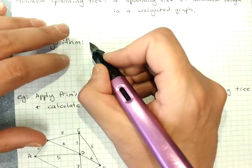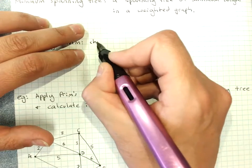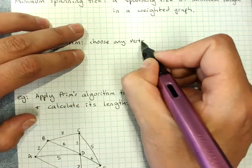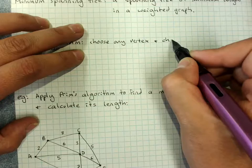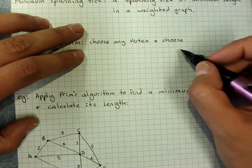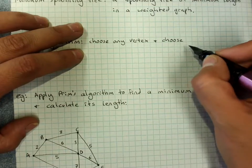So you choose any vertex and you choose the lowest weight edge coming off it.